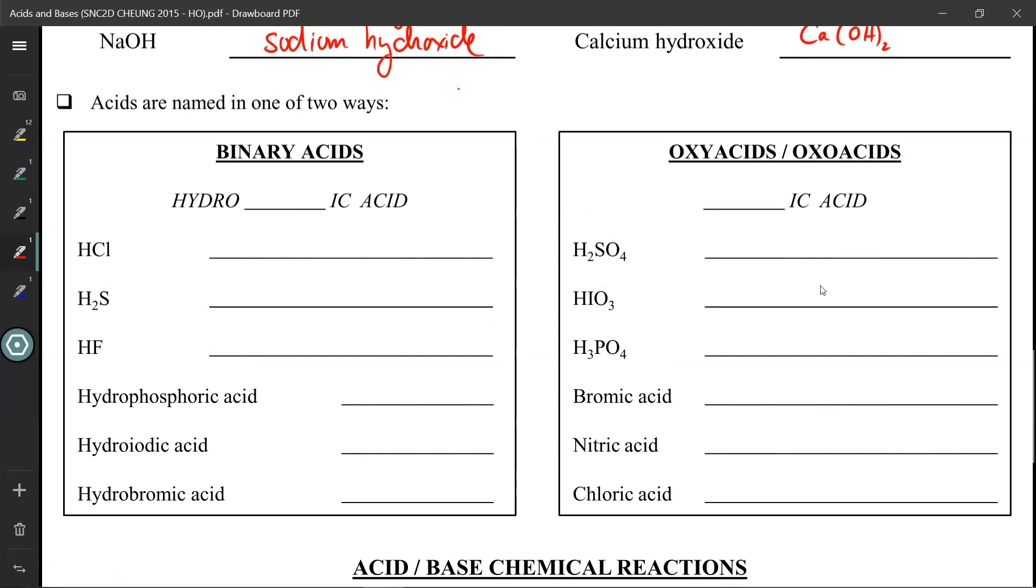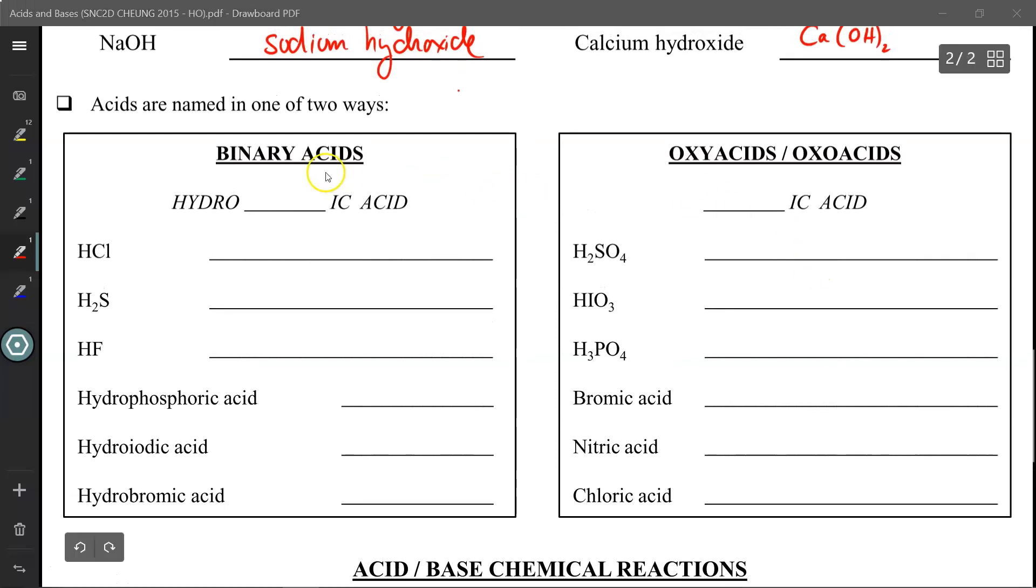Unfortunately, naming acids is a little more complicated. There are two naming systems we're going to look at: binary acid and oxyacid (sometimes called oxoacid). These are called binary acids because binary means two, and each one involves only two elements - hydrogen chlorine, hydrogen sulfur, hydrogen fluorine. These are called oxyacids because every single one contains an oxygen inside.